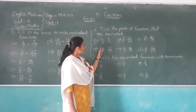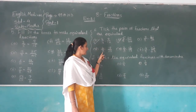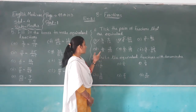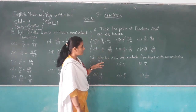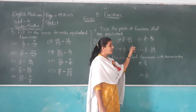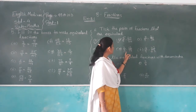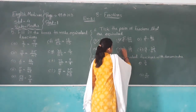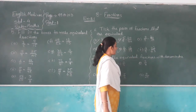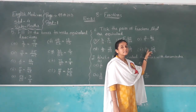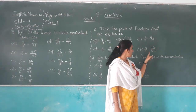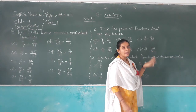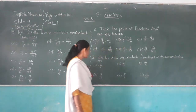Two nines are eighteen and seven fours are twenty-eight — this pair is also not equivalent. Two sixes are twelve and three sixes are eighteen — this pair is equivalent. Four eights are thirty-two and nine sevens are sixty-three — this pair is not equivalent.